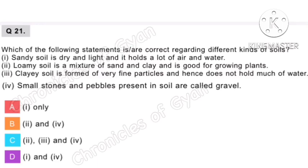Question 21. Which of the following statements is/are correct regarding different kinds of soils? Statement 1: Sandy soil is dry and light and holds a lot of air and water — this is incorrect. Statement 2: Loamy soil is a mixture of sand and clay and is good for growing plants — it contains more moisture, nutrients and humus compared to sandy soil and better drainage compared to clay and silt soil — this is correct. Statement 3: Clay soil is formed of very fine particles and does not hold much water — incorrect, clay retains more water. Statement 4: Small stones and pebbles in soil are called gravel — correct. So correct option is option B, statements 2 and 4 are correct.